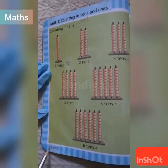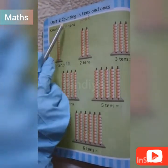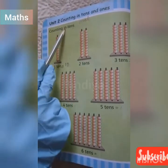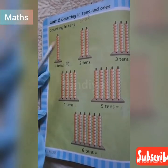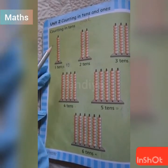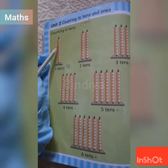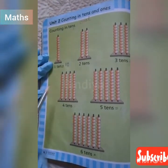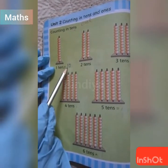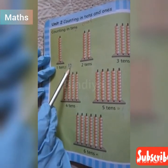Unit number 2. Counting in 10s and 1s. Counting in 10s. The 10 beads together make 1 group of 10 beads. We say there is 1 group of 10 or 1 ten. Now we count it. 1, 2, 3, 4, 5, 6, 7, 8, 9, 10. It's 10 beads in 1 ten. 1 ten is equal to 10.